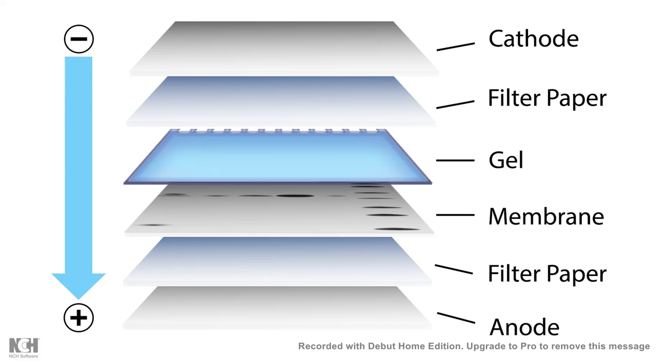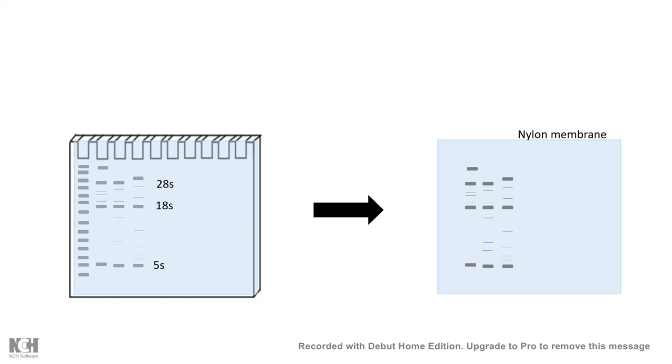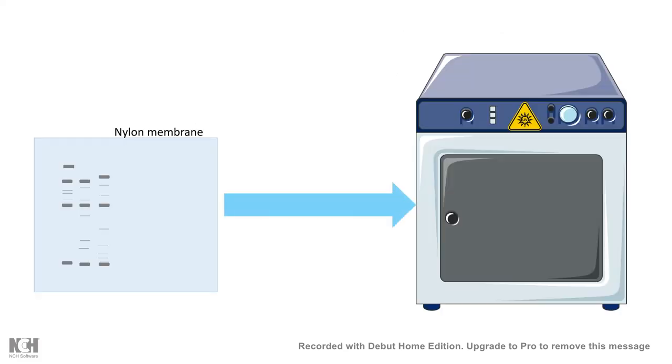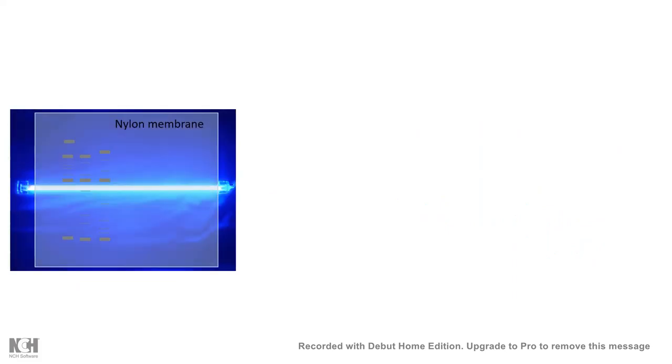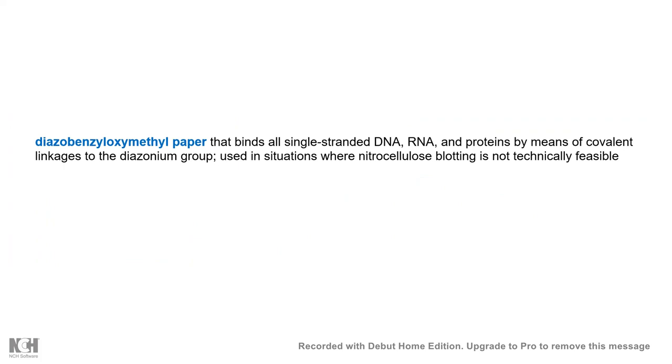Once it is in the membrane, we can put the membrane in a UV incubator. Inside the UV incubator, the nylon membrane would cross-link with the RNA present on it, so now it's permanently fixed on the nylon membrane. One alternative to nylon membrane is diazobenzyloxymethyl paper, but it is case-specific, only used when nitrocellulose or nylon membrane does not work.